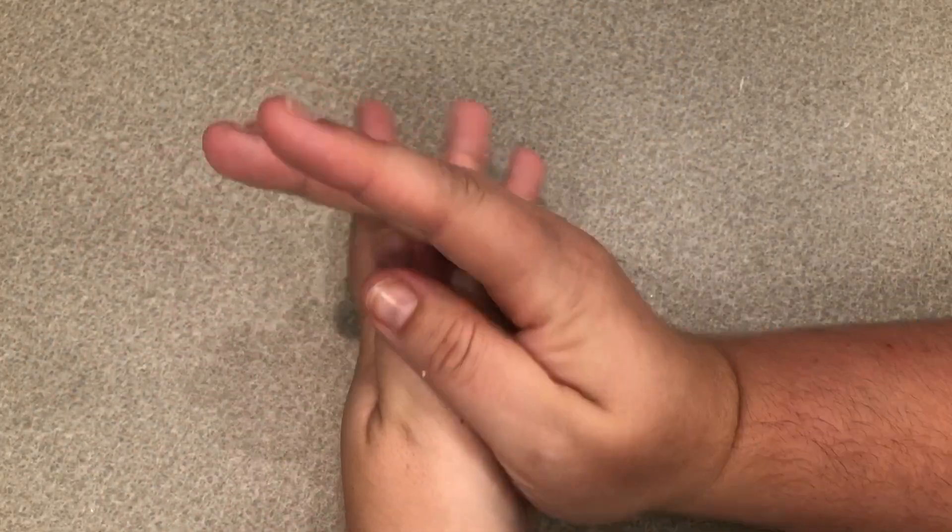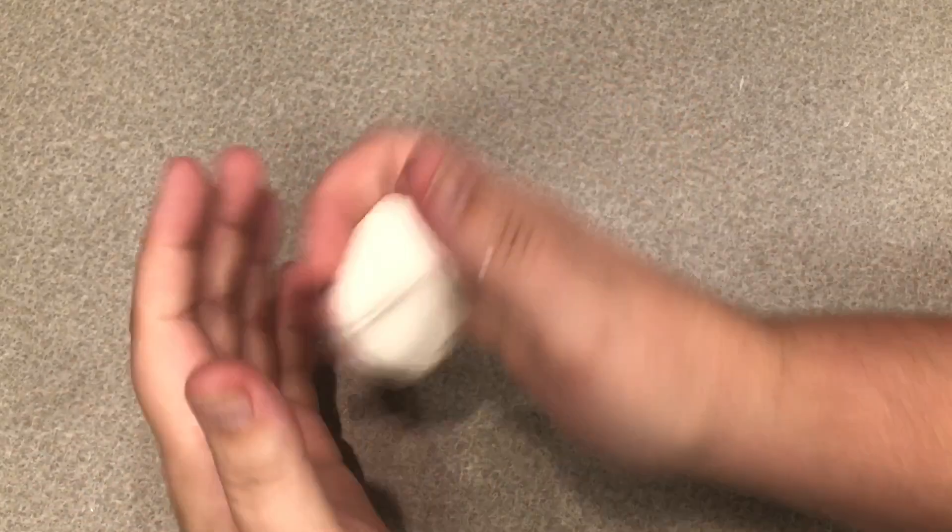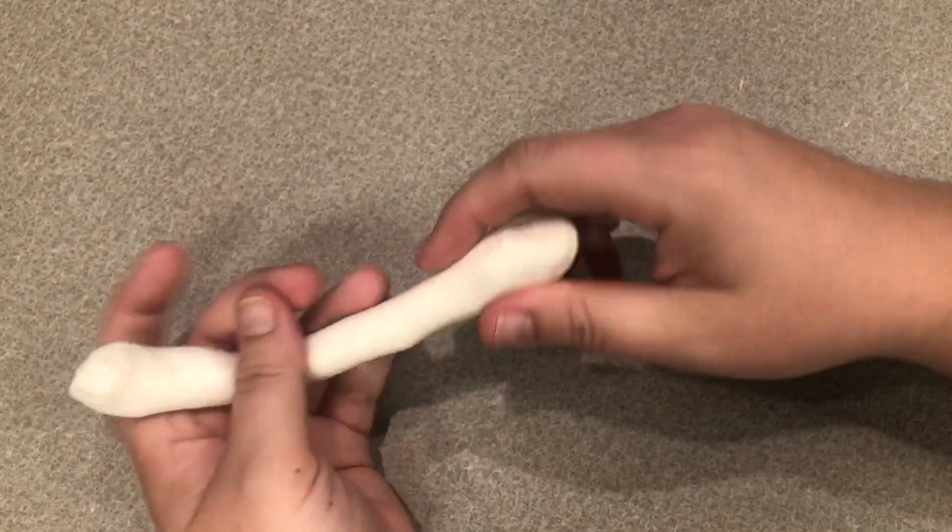So with the rest of my clay I'm just going to make a little snake kind of body. So to start I'm going to roll the rest of our clay into mostly a ball and then just start lengthening it.